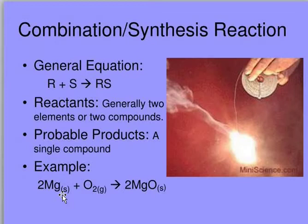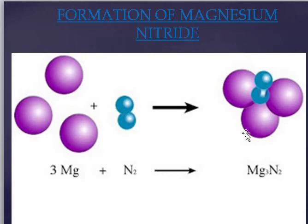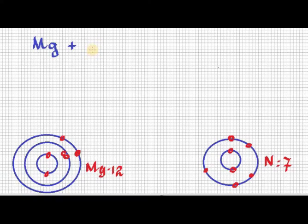Now let's look at the formation of magnesium nitride. The formula of magnesium nitride is Mg₃N₂. Three magnesium atoms — shown as larger circles — combine with two nitrogen atoms to form Mg₃N₂. This is the way it is formed, and I'm going to show you in the equation.